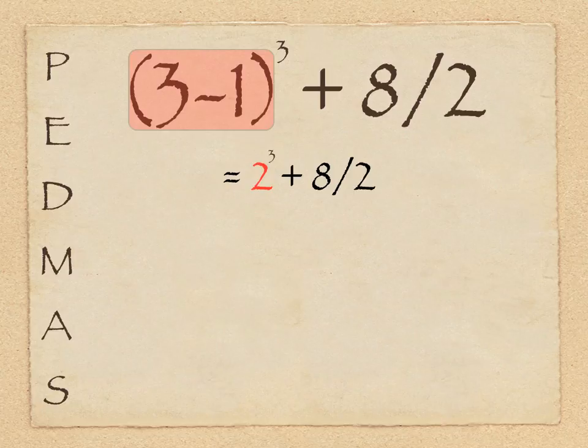And we remove the parentheses because there is no more work to do inside of them. So now we have 2 to the third power, plus 8, divided by 2. And there's no more work to do inside parentheses, there's no parentheses left. So on the left side of the screen, we're moving down now to the E, which stands for exponents, or square roots. And we do indeed have an exponent.